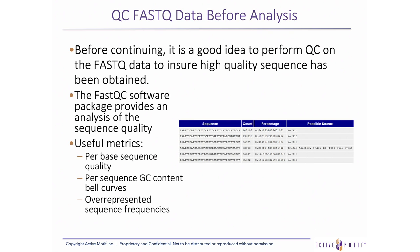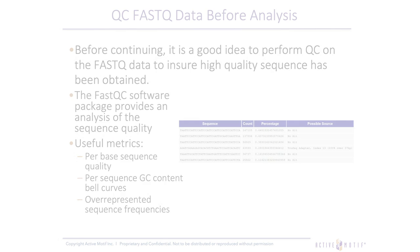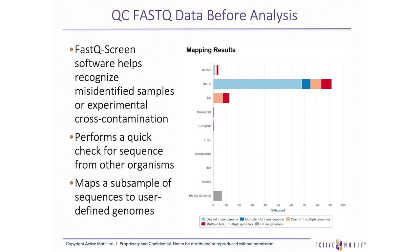Finally, the frequency of over-represented sequences shows whether unexpected remnants such as untrimmed adapters or large stretches of homopolymers due to poor library prep may exist. A second useful software package for QC of FASTQ data is the FASTQ Screen software. This subsamples each FASTQ file for 100,000 reads and maps them to user-defined genomes, allowing a quick check for the presence of sequence from other organisms, which might indicate sample mix-up or cross-contamination. In this example, most of the sequence maps to the mouse genome — this would be a red flag if you expected your samples to be of human origin.